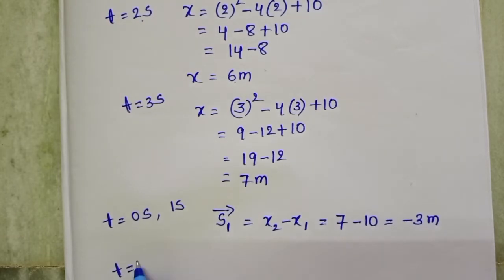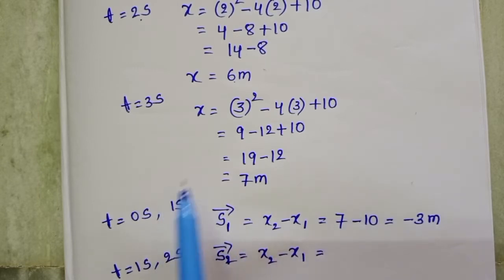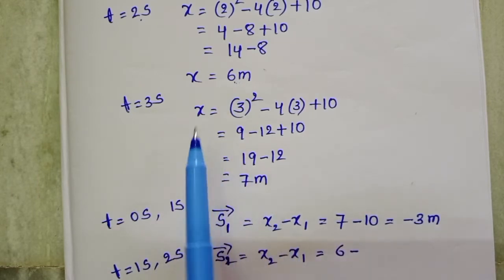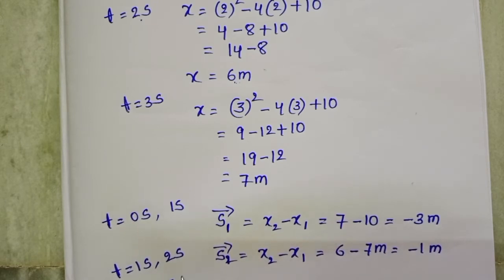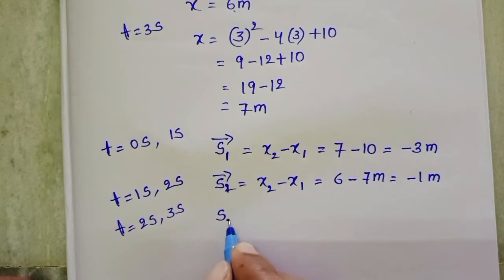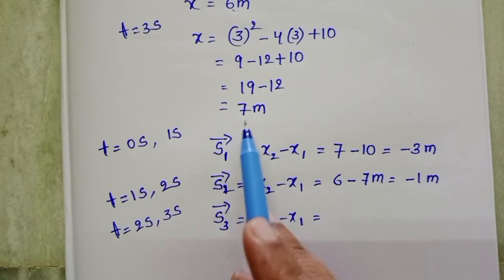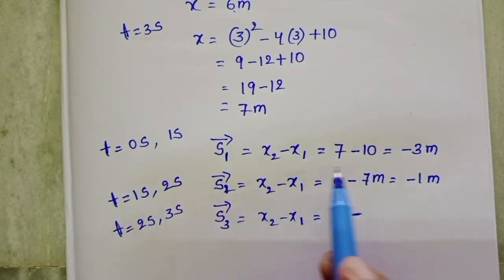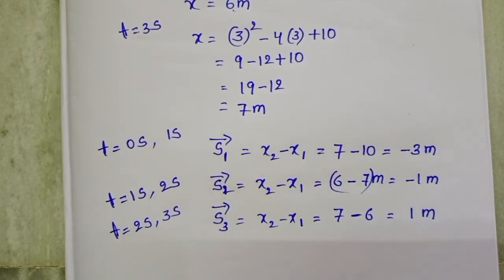From 1 second to 2 seconds, S2 = x2 minus x1 = 6 minus 7 = minus 1 meter. From 2 seconds to 3 seconds, S3 = x2 minus x1 = 7 minus 6 = 1 meter.